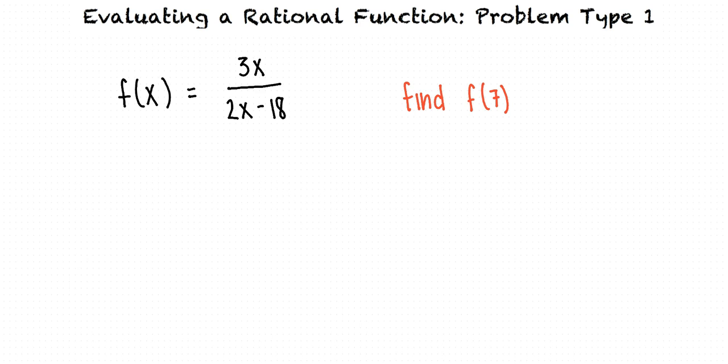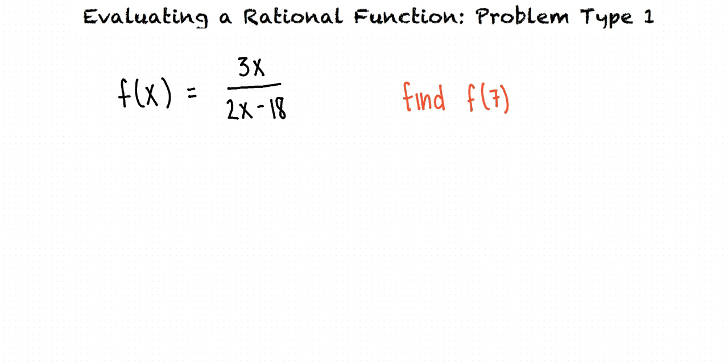Let's look at an example. The function f is defined as f of x equals 3x over 2x minus 18. We want to find f of 7.